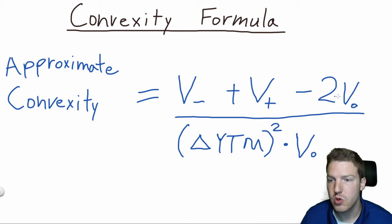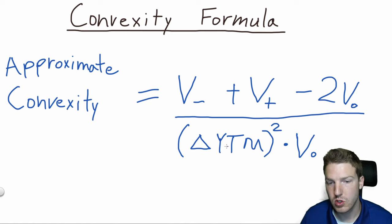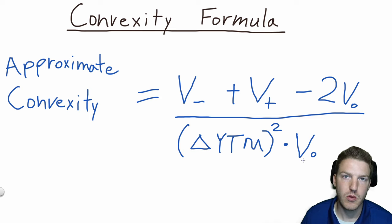subtracted by two times the original value of the bond. Now the denominator is the yield to maturity, the change in the yield to maturity, so how much should interest rates change, squared, multiplied by the original value of the bond.